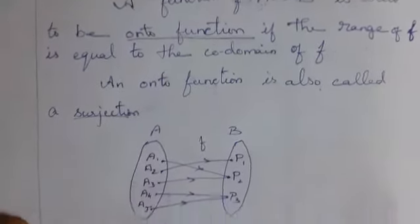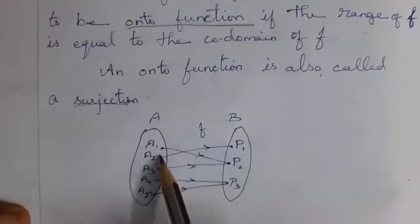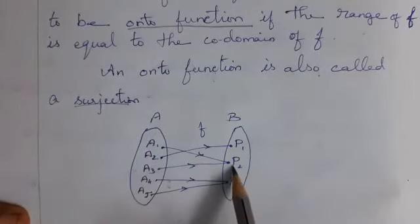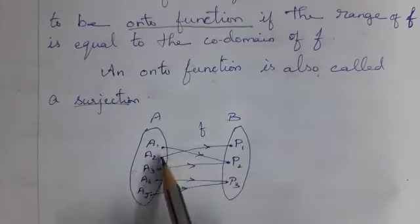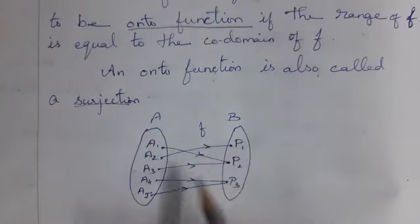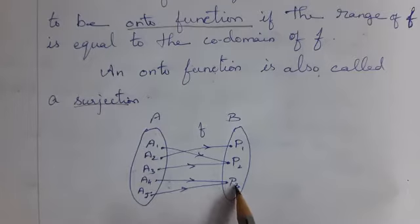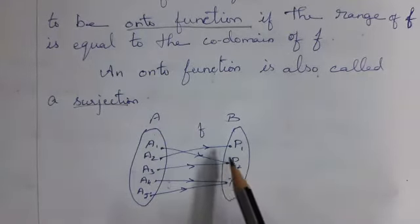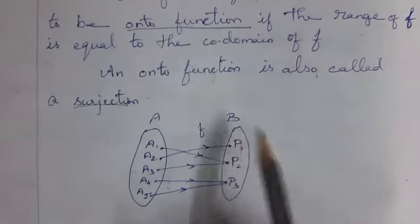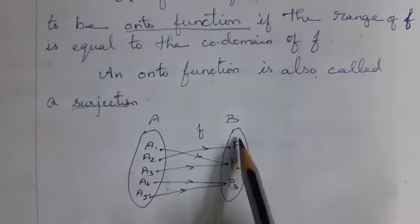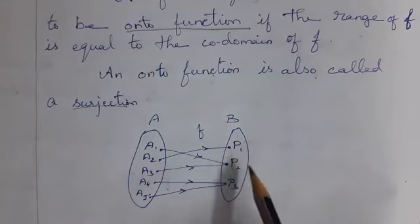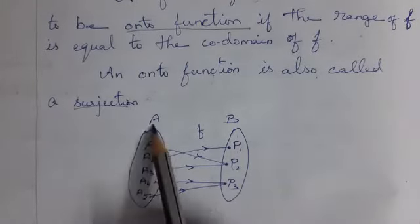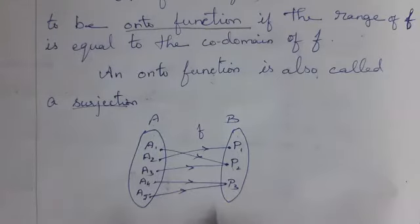See one more example for onto. Here, a1 has an image; a2 and a3 have image p2; a2 only p1; a4 and a5 have image p3. Check from the co-domain — from set B: p1, p2, and p3. All the elements in B have a pre-image in capital A. Therefore, it is an onto function.